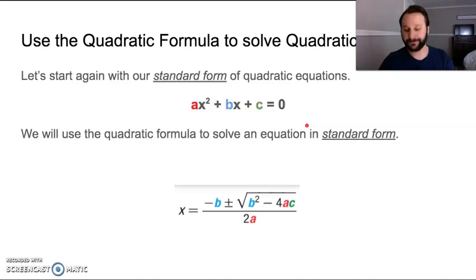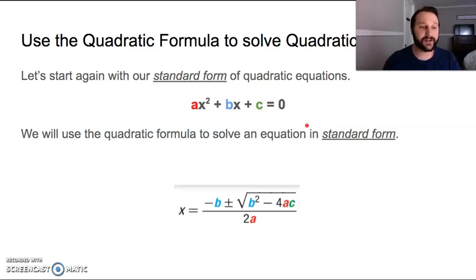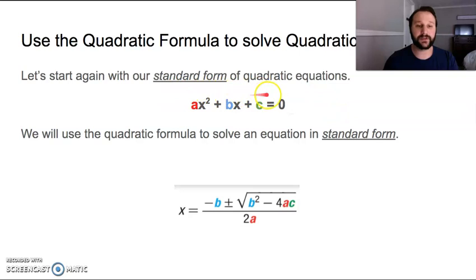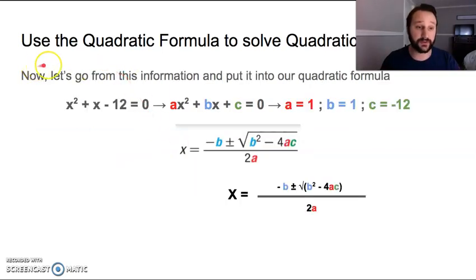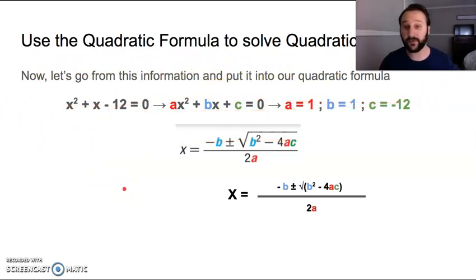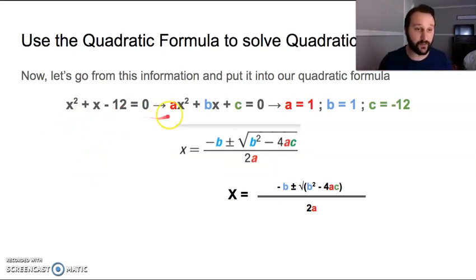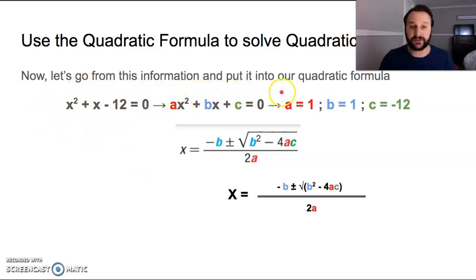That's what we're trying to do in this video. We're going to kind of start off where we started last time, using this to solve quadratic equations. We start with our standard form of a quadratic equation: ax squared plus bx plus c equals zero. And then we're going to use the quadratic formula to solve an equation in standard form. This is exactly what we were trying to do in our last video — we kind of abbreviated it here. I think we got a good handle on it last time, so let's jump right in.